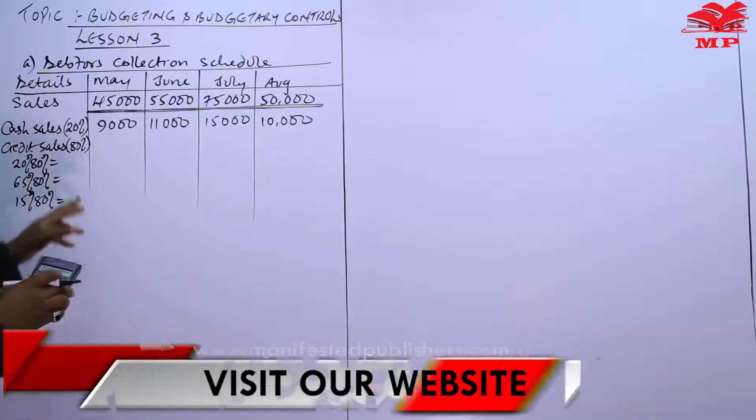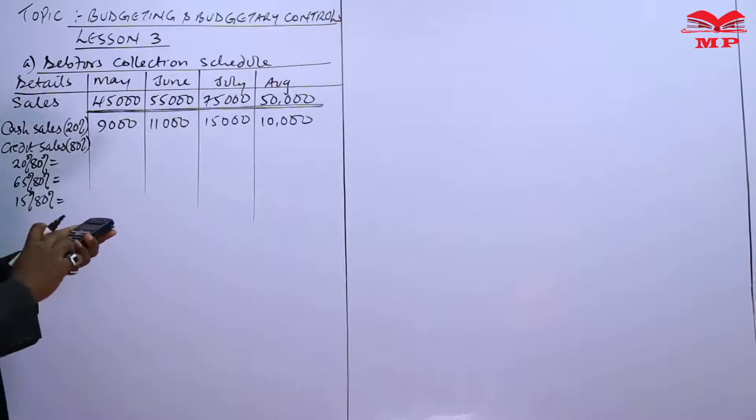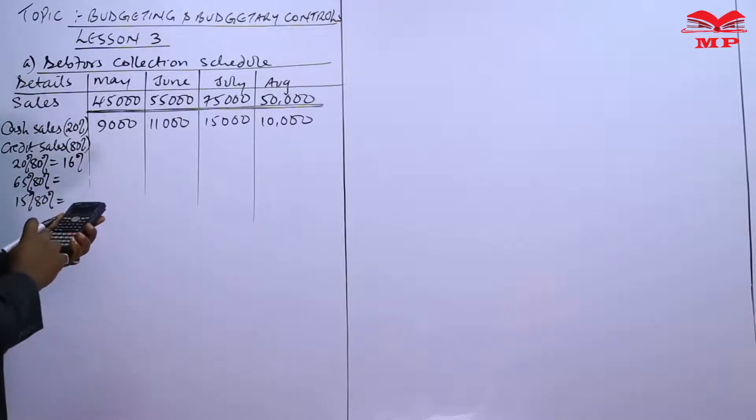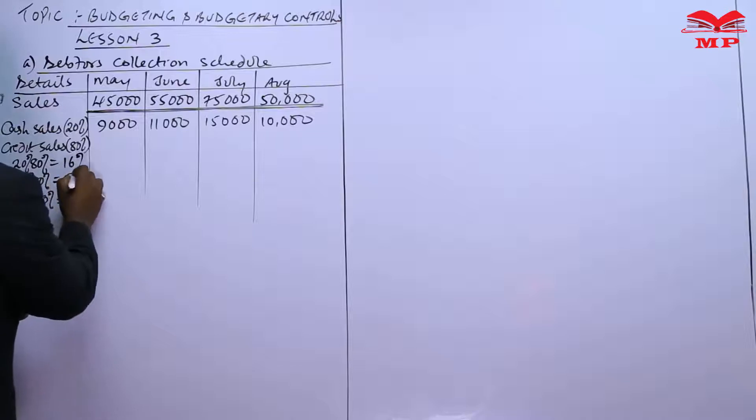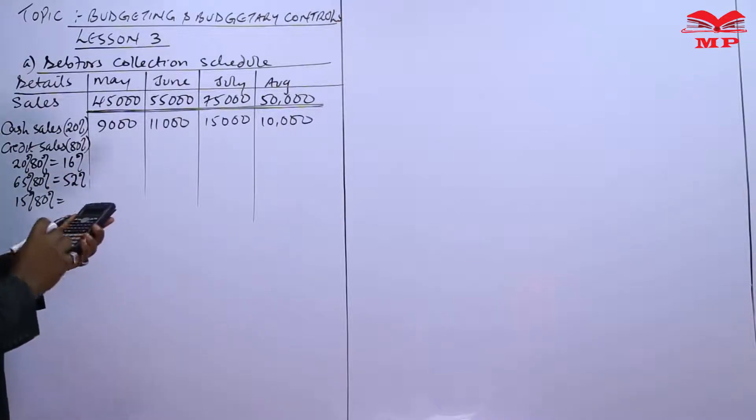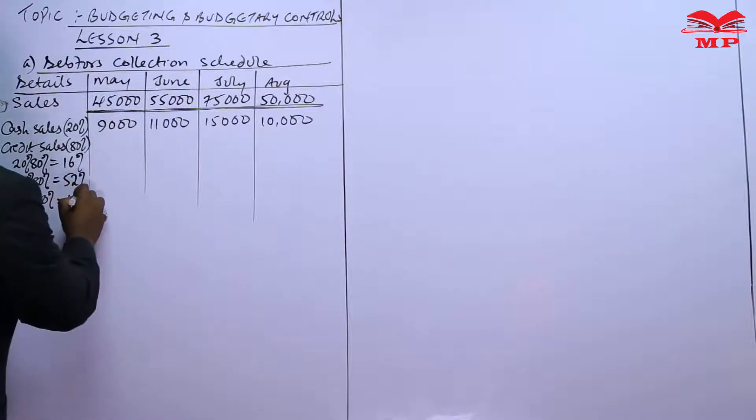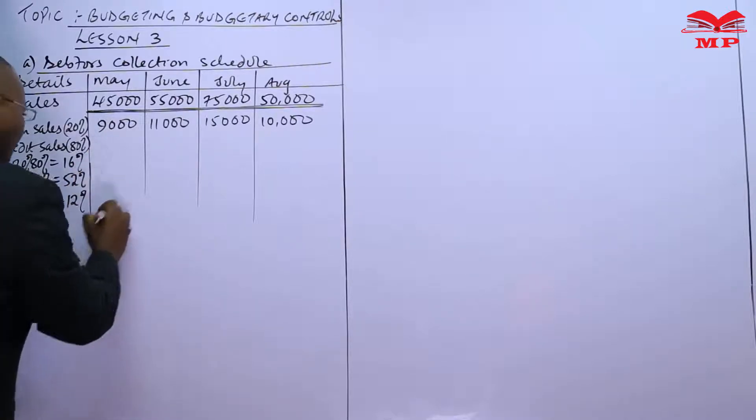Which is going to be 0.2 times 80, this is 16%. 0.65 of 80, this is 52%. And 0.15 of 80, this is 12%. Now one thing to note, just working with the percentages.